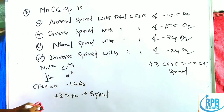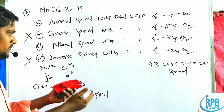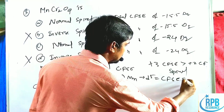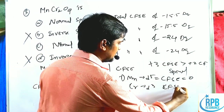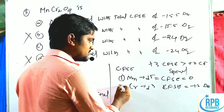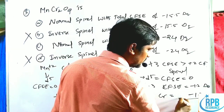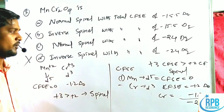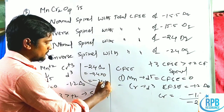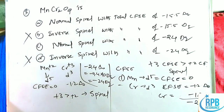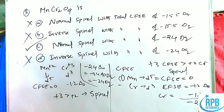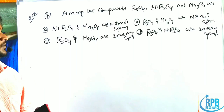Now calculating total CFSE: Mn²⁺ (d⁵) contributes 0; each Cr³⁺ (d³) contributes −1.2 ΔO, and there are two chromiums, giving 2 × (−1.2) = −2.4 ΔO. Converting ΔO to dq (1 ΔO = 10 dq): −2.4 × 10 = −24 dq. So the answer is the normal spinel with −24 dq — option C.